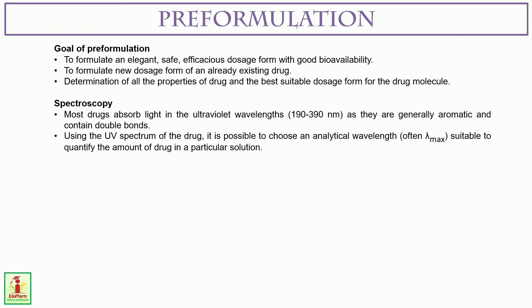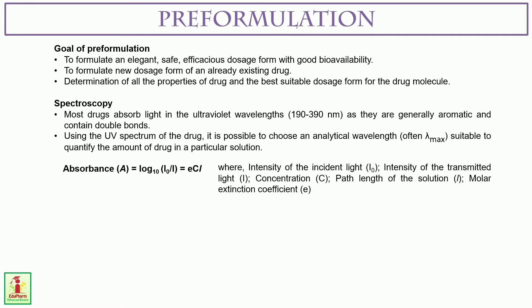Now comes spectroscopy. Most drugs absorb light in the ultraviolet wavelengths, from 190 to 390 nm, as they are generally aromatic and contain double bonds. Using the UV spectrum of the drug, it is possible to choose an analytical wavelength — often lambda max — suitable to quantify the amount of drug in a particular solution, where absorbance A = log₁₀(I₀/I) = ECl. Here I₀ is the intensity of incident light, I is the intensity of transmitted light, C is concentration, L is path length of the solution, and E is the molar extinction coefficient.